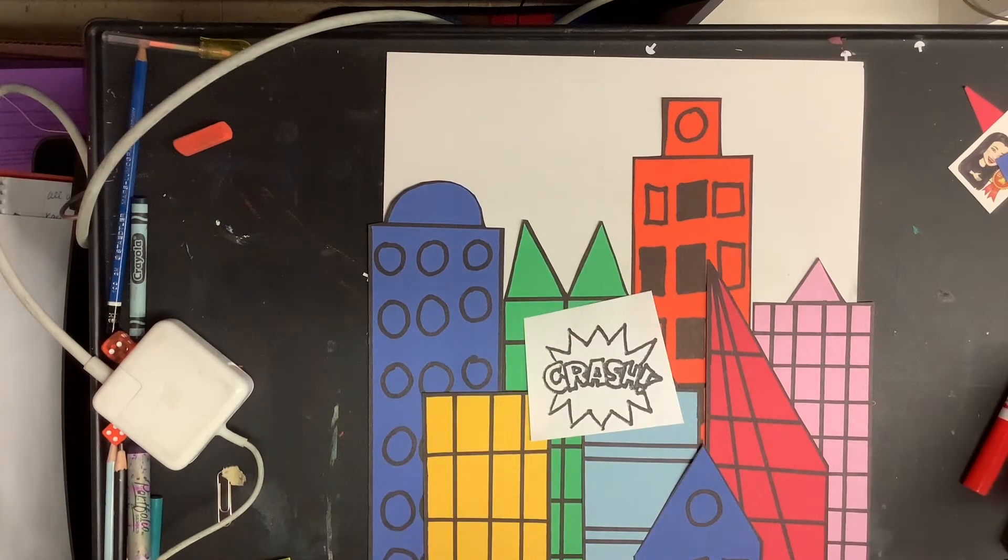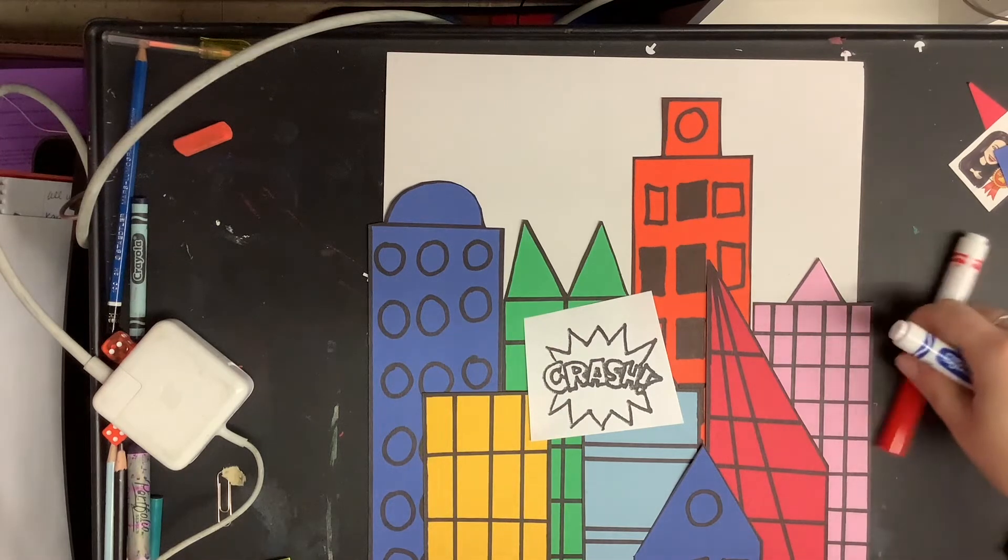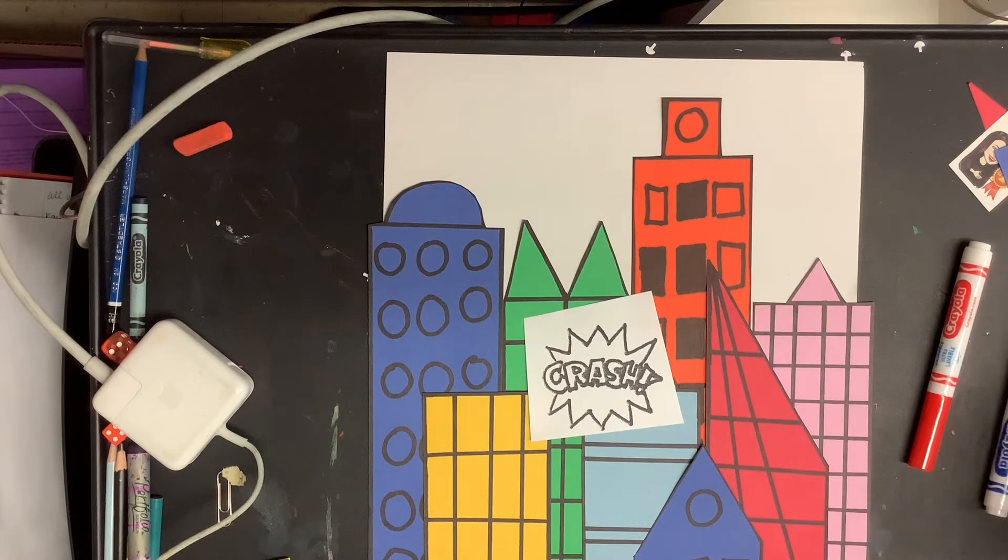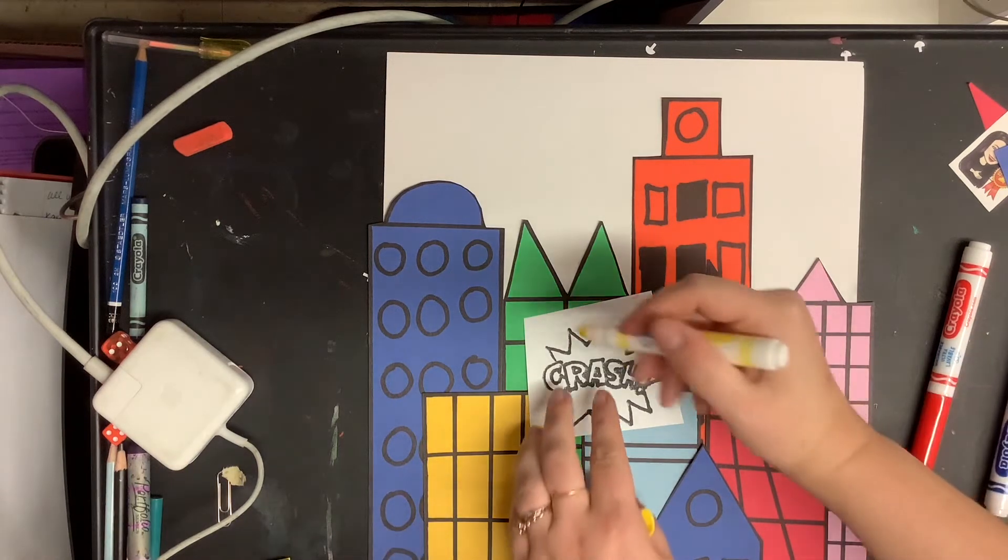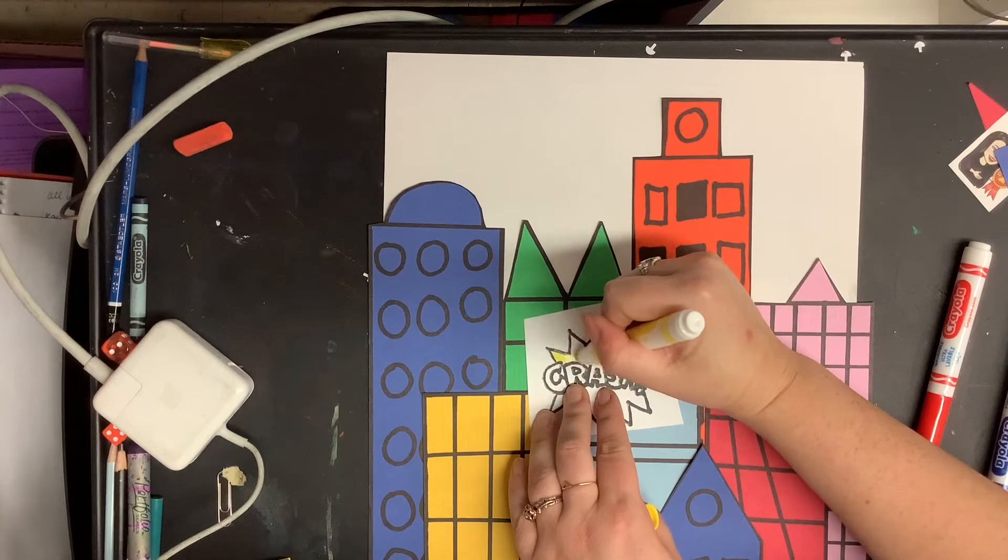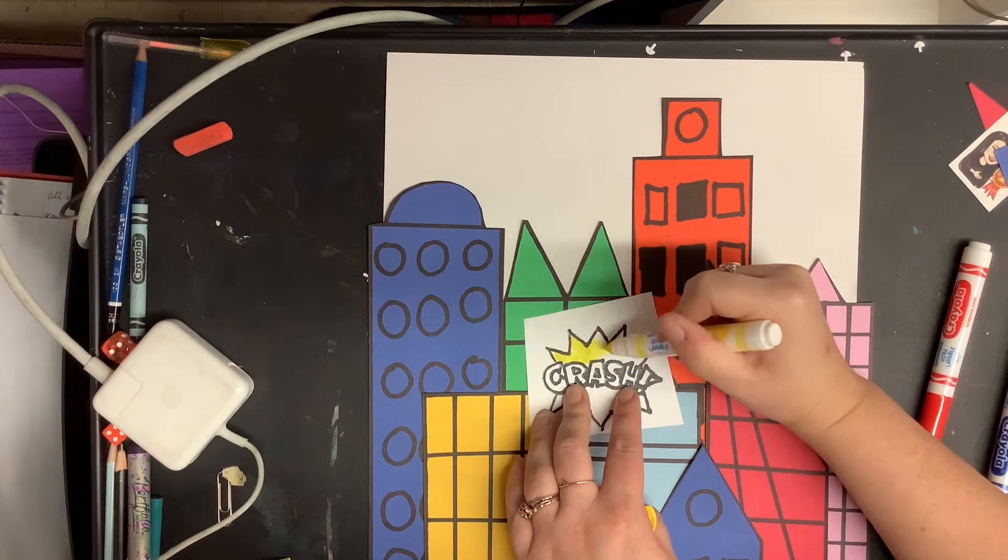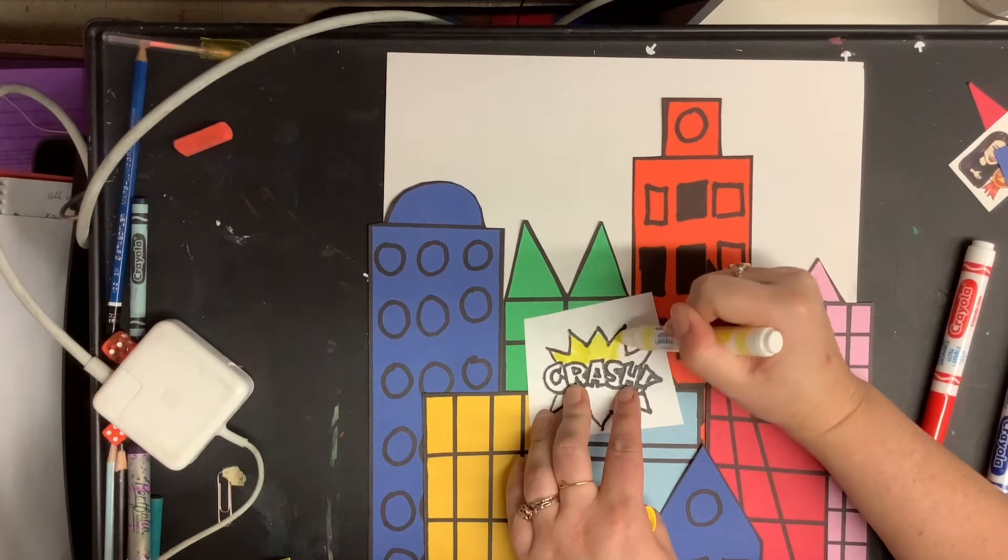So usually superheroes have like a primary color scheme happening. I don't know why that is that's just something that has been the case for lots and lots of superheroes. So I would suggest using a primary color. I'm gonna color this in yellow and I'm using marker but you can use crayon or colored pencil that's up to you.